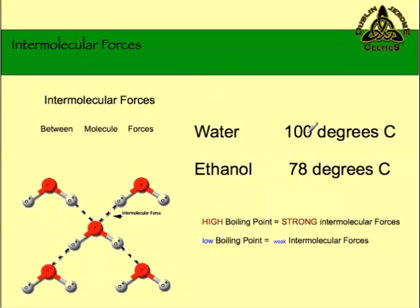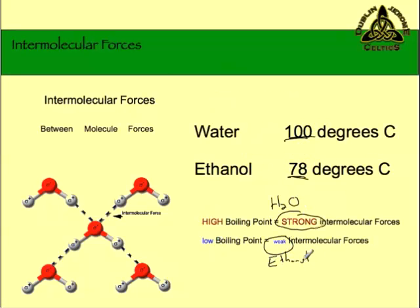Here's an example: water boils at 100 degrees, ethanol at 78. Water boils at a higher temperature because it has stronger intermolecular forces. Ethanol boils at 78 degrees and, compared to water, it has weaker intermolecular forces. It's easier to break ethanol molecules apart, and because of that, water is going to boil at a higher temperature — it will turn into a gas later. That's the basic definition of what an intermolecular force is and how it relates to boiling.